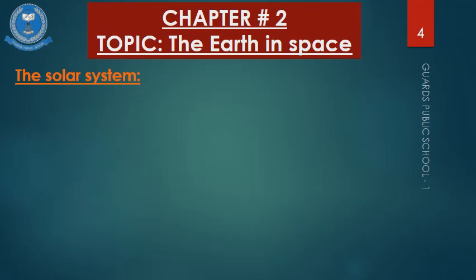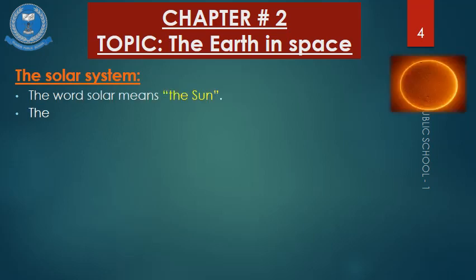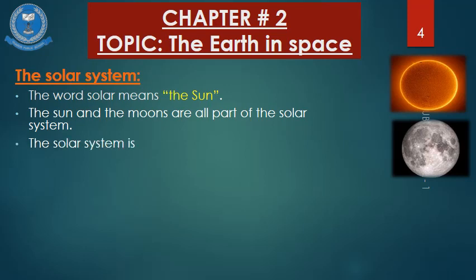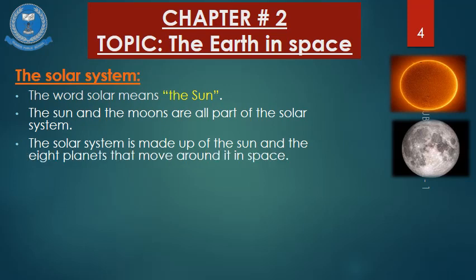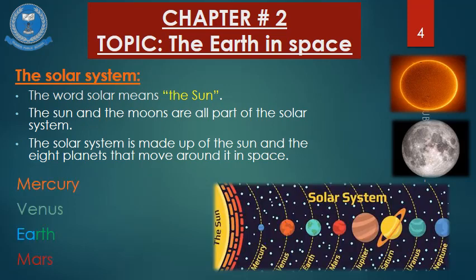The solar system is made up of the sun and the eight planets that move around it in space. 'Solar' means the sun. Our solar system is made up of the sun and eight planets: Mercury, Venus, Earth, Mars, Jupiter, Saturn, Uranus, and Neptune.